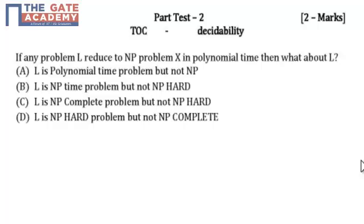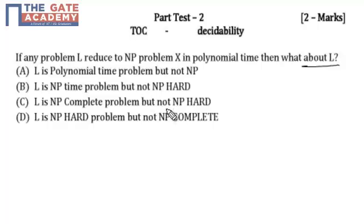If any problem L is reduced to an NP problem X in polynomial time, then what about L? If any problem — we do not know which type — is reduced to an NP problem in polynomial time, then that type of problem is called an NP-hard problem.